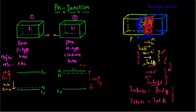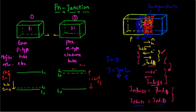The total current density J in this PN junction will be 0. J equals JP plus JN — the current density due to holes and electrons respectively. The drift and diffusion components of both holes and electrons are equal and opposite, so they cancel out. Under equilibrium, when a PN junction is formed, the net current flow is 0, though the individual components are finite values.